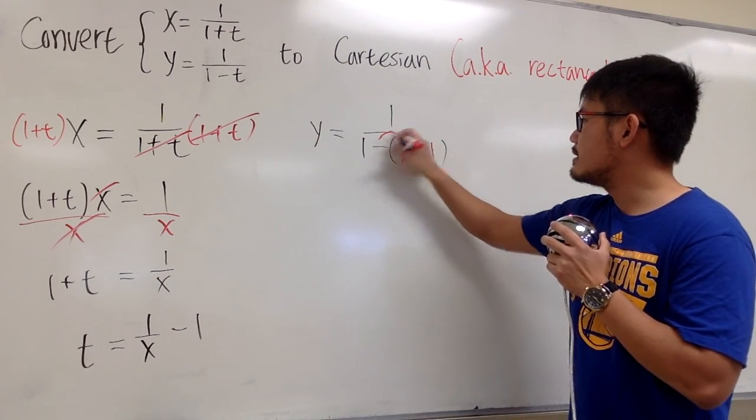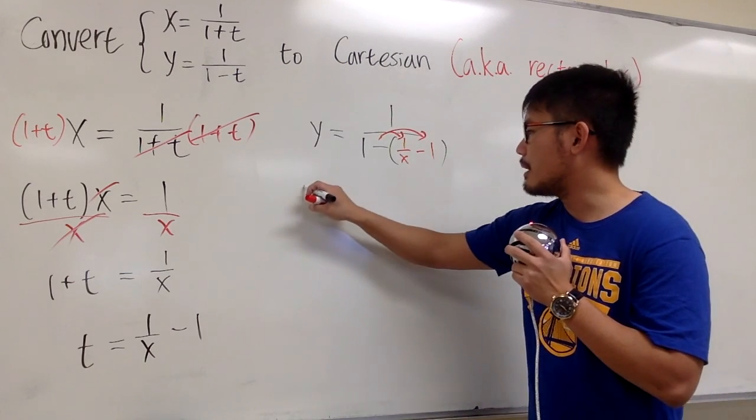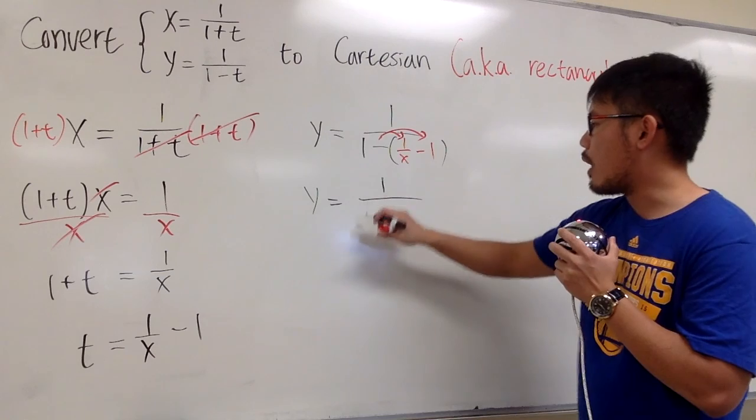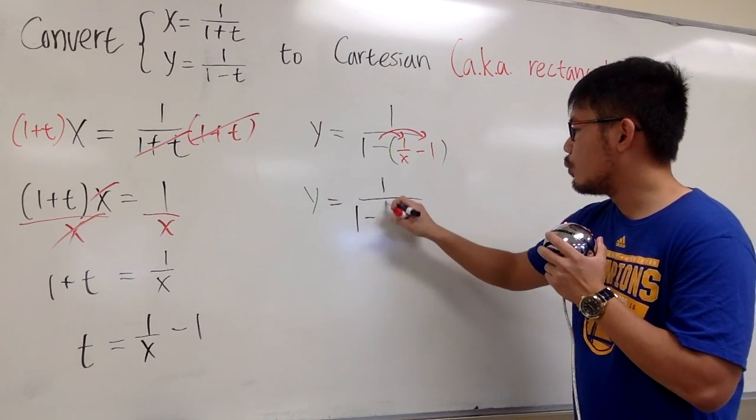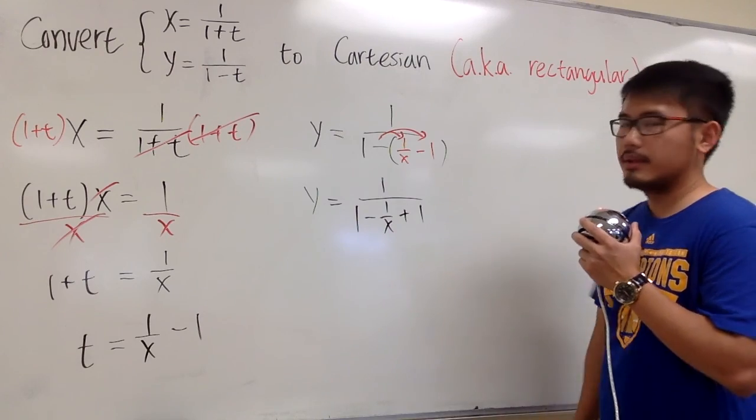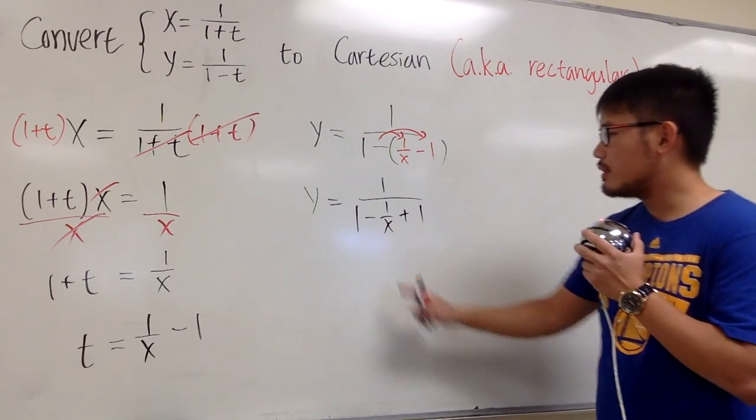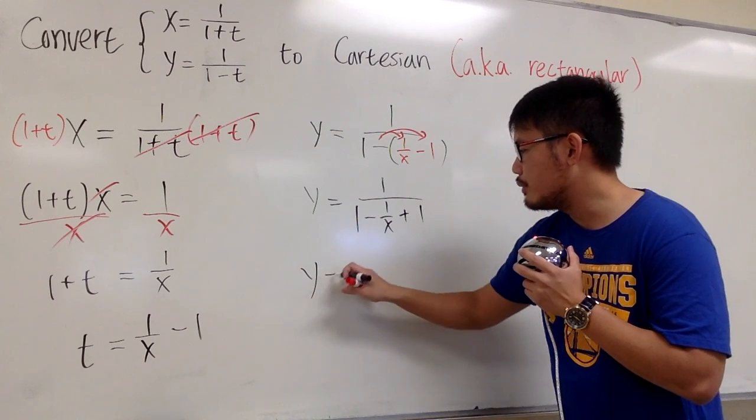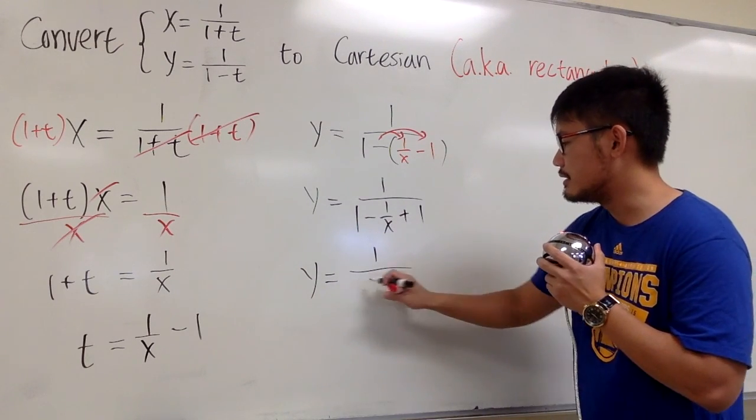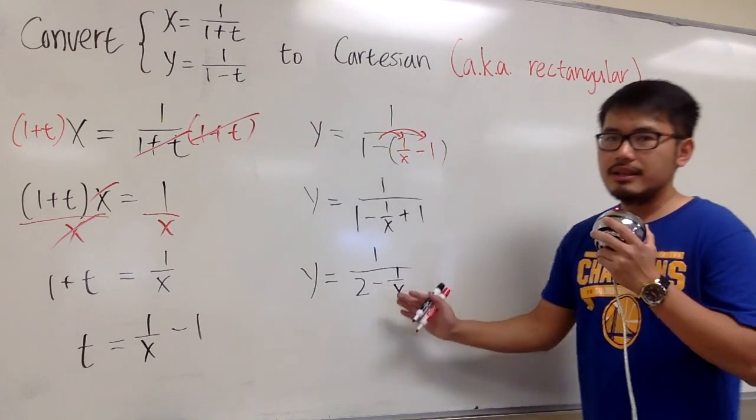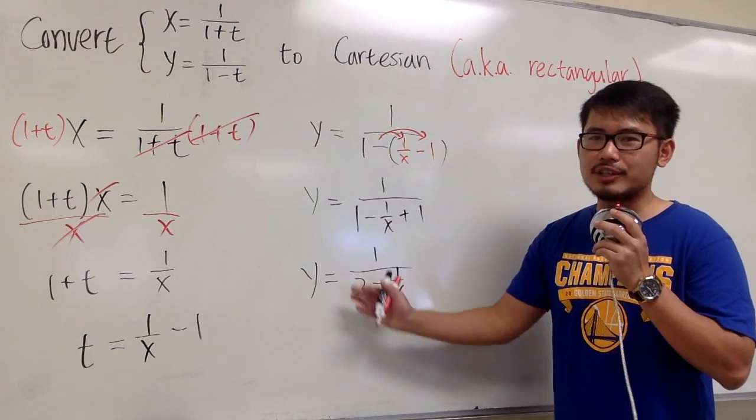Let's distribute the minus into the parentheses. We are talking about y is equal to 1 on the top over 1 minus 1 over x, and then minus times minus becomes plus 1. On the denominator, we have 1 plus 1, which is 2. So we can say this is y equals 1 still on the top over, this is 2, and then we have minus 1 over x.